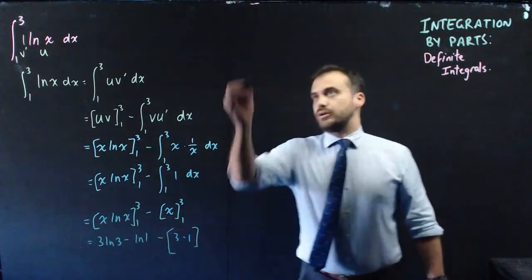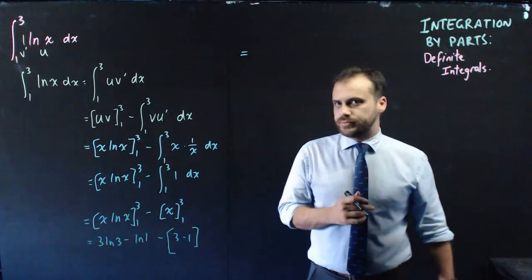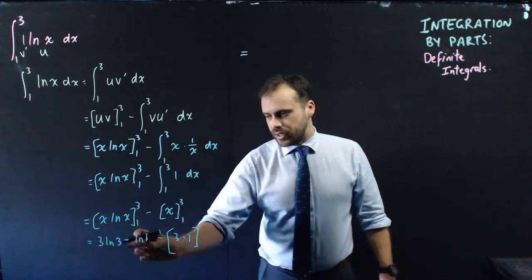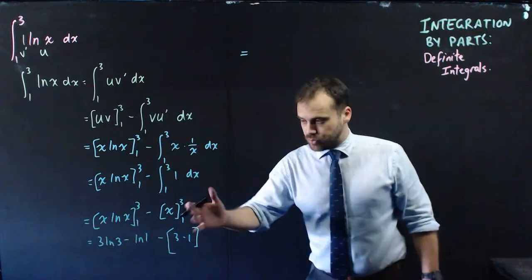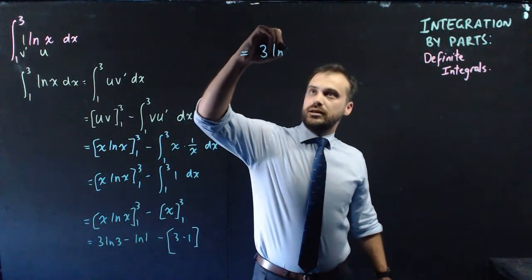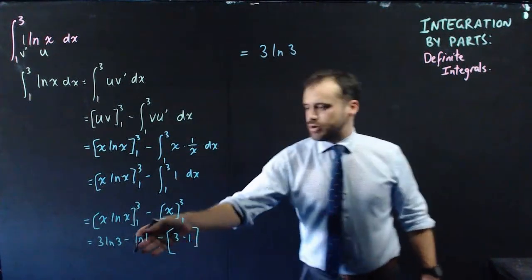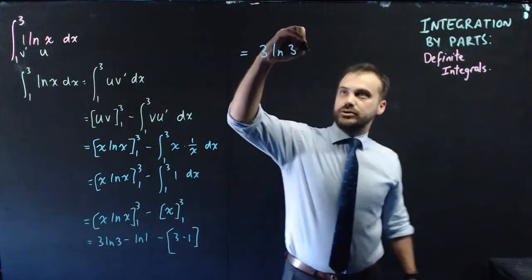Okay, so I'll bring that up to here now. So 3 ln 3 minus ln 1. Now you should look at that ln 1 and realize that that's equal to 0. e to the something equals 1. So 0 there. So we get 3 ln 3 minus 0 minus 3 minus 1. So minus 2.